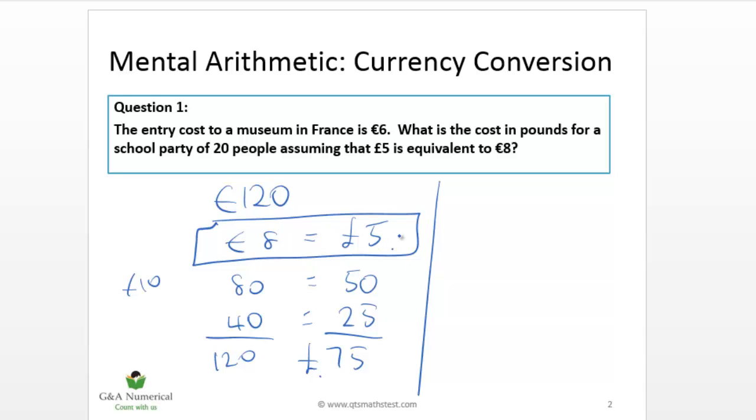An alternative method, if you don't like this one, because it would take a little bit of practice, but the more traditional way of attempting this question would be like this. So once again, you start with the conversion rule that you're given. That one doesn't change. And then you say, okay, how many pounds is 1 euro?